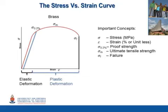The way in which this point is acquired is as follows. First, identify the point where the material has experienced 0.2% of its maximum elongation and mark it on the x-axis. Now draw a line that is parallel to the linear portion of the graph. Where this line intersects the stress-strain curve is where the proof strength of the material lies.